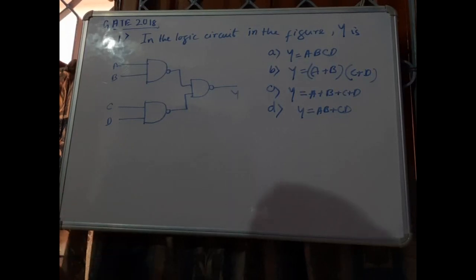Now this is problem number 1 of GATE 2018. In the logic circuit in the figure, y is: option a, y equals a b c d; option b, y equals (a plus b) into (c plus d); option c, y equals a plus b plus c plus d; and option d, y equals a b plus c d.